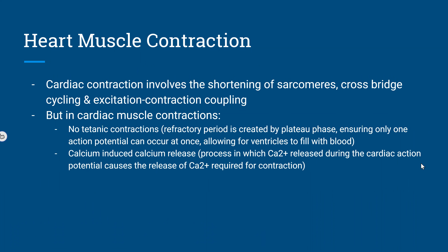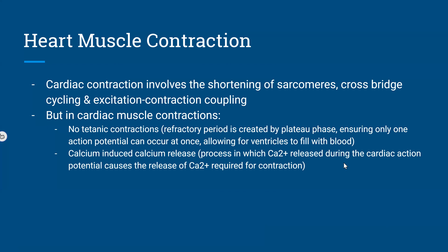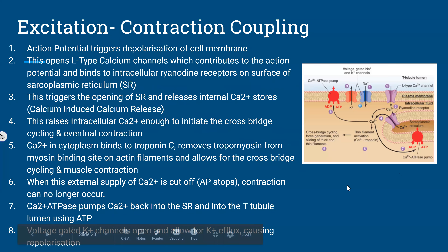Cardiac contraction involves cross-bridge cycling and excitation-contraction coupling — similar to skeletal muscle but with differences. In cardiac muscle there are no tetanic contractions; the refractory period is created by the plateau phase, ensuring only one action potential can occur at a time, allowing ventricles to fill with blood. Calcium-induced calcium release is the process by which calcium is released following an action potential to trigger contraction.